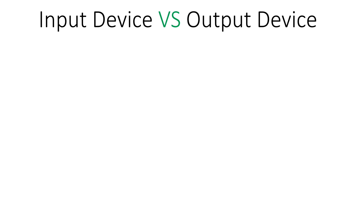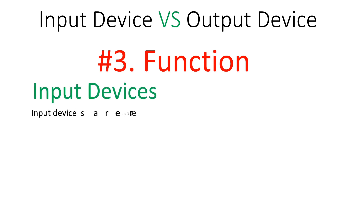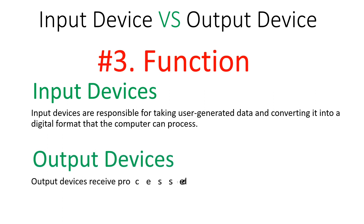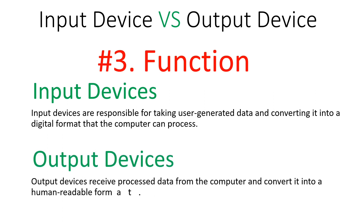In terms of function, input devices are responsible for taking user-generated data and converting it into a digital format that the computer can process. Output devices receive processed data from the computer and convert it into a human-readable format for the user.